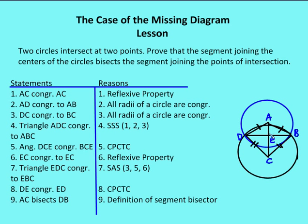I've already said that AC is congruent to itself, so I have two triangles that are congruent. Triangle ADC is congruent to triangle ABC by side-side-side. Then I'm going to say that angle DCE is congruent to angle BCE by CPCTC.